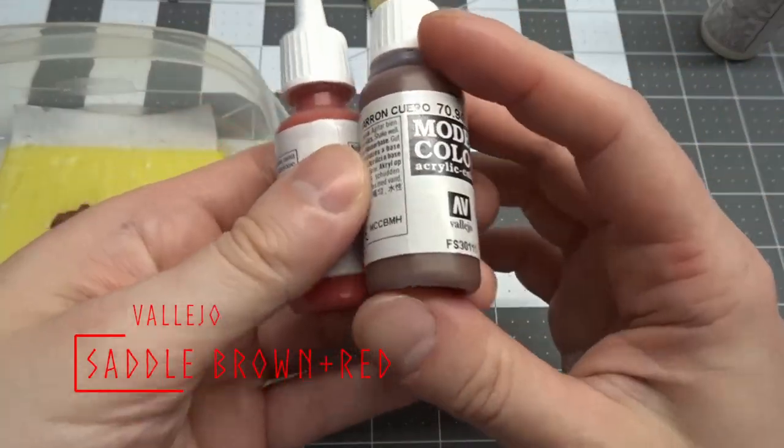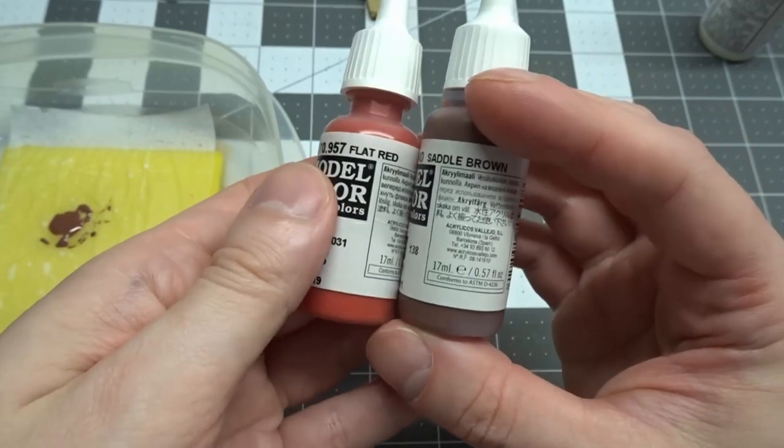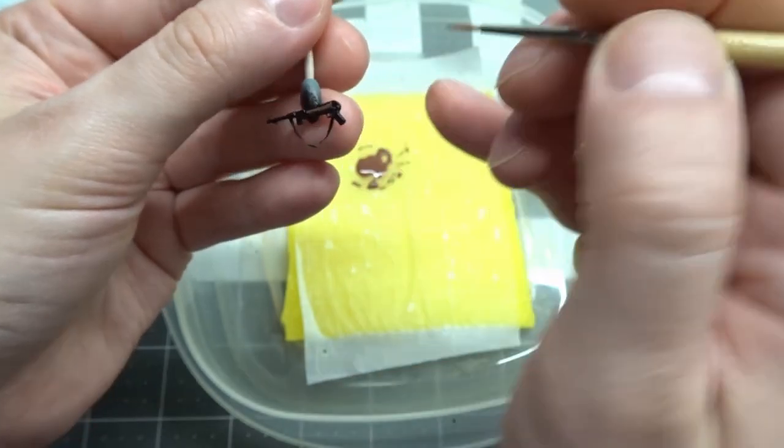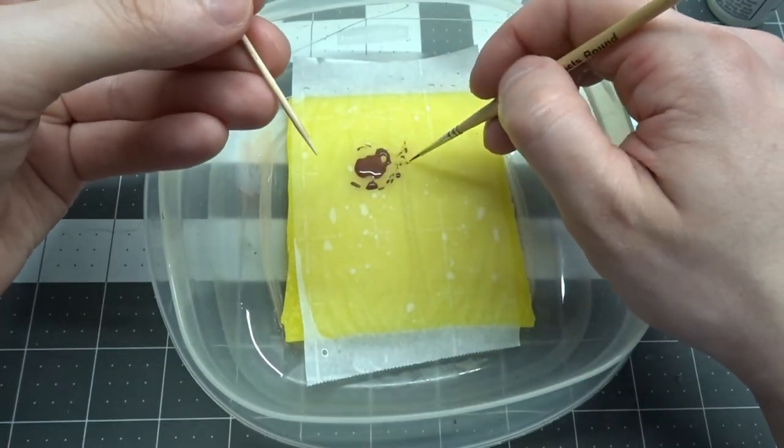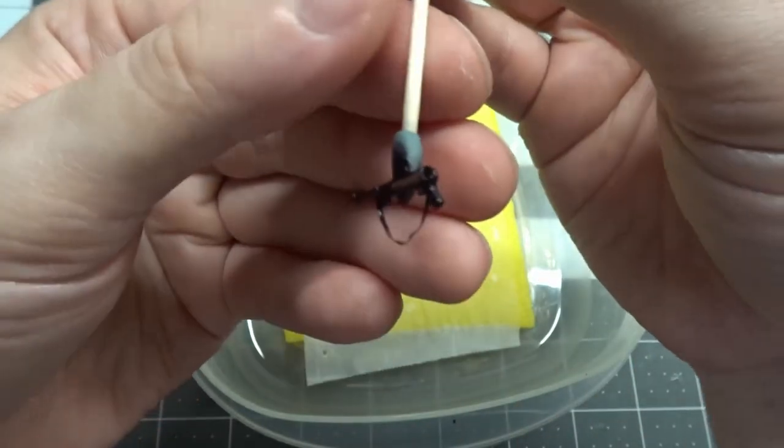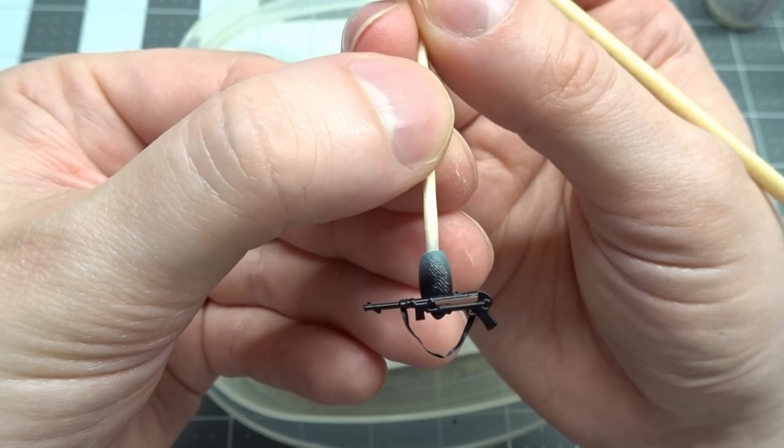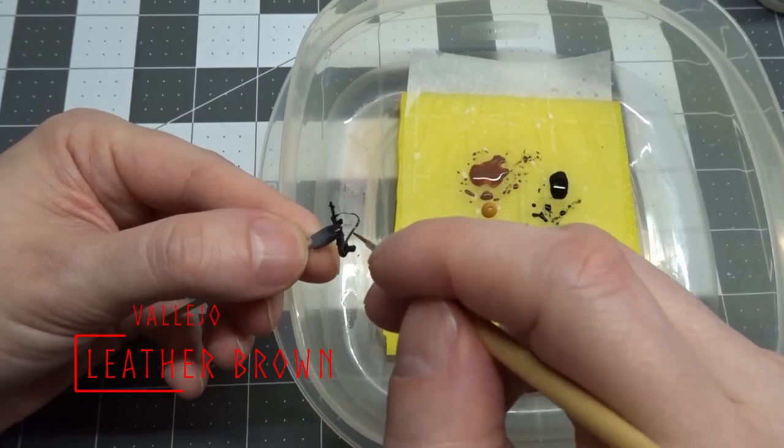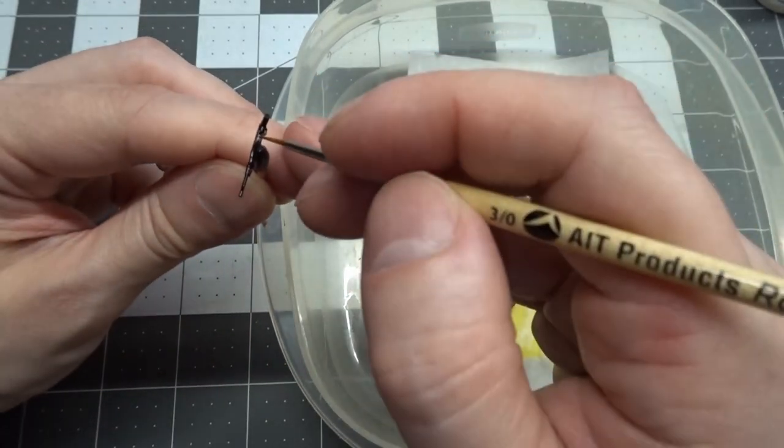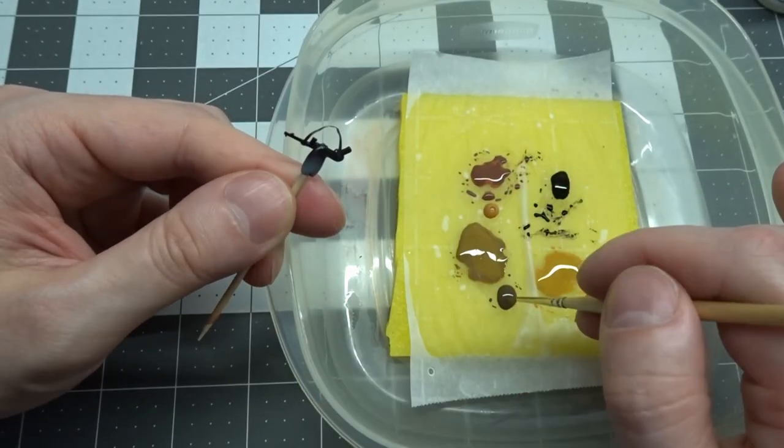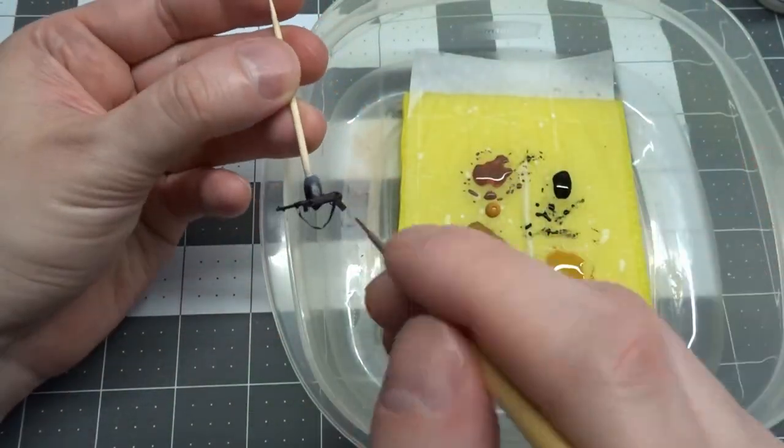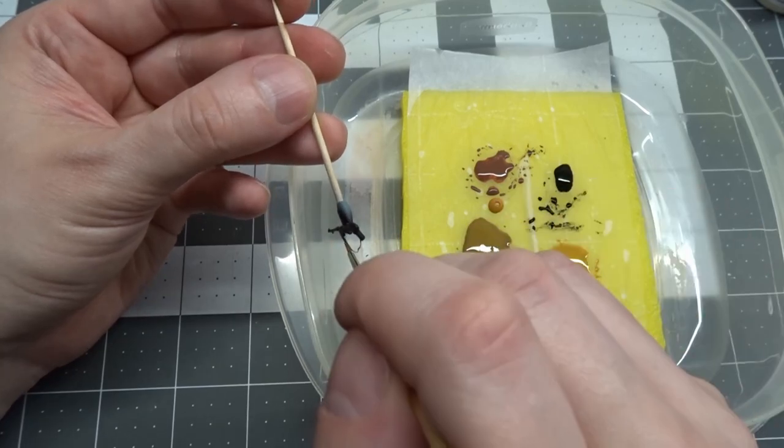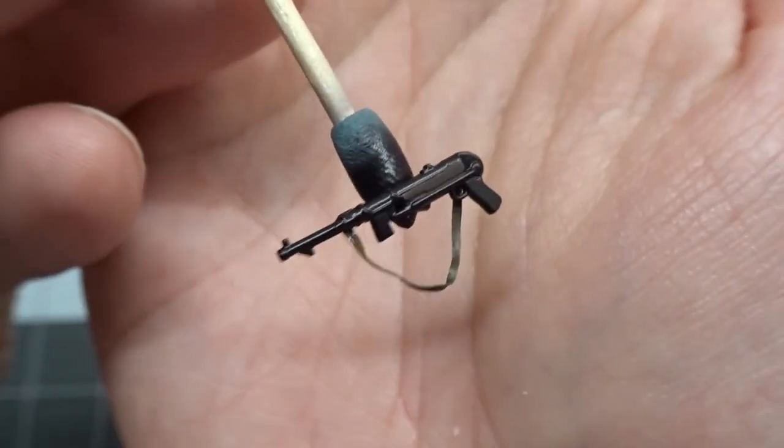The bakelite parts of the MP40s are going to be painted a mix of Vallejo Saddle Brown and Flat Red. This is painted over a coat of Alclad 2 Gun Metal, which is itself painted over gloss black. This color dries to a lot darker shade than what it looks like now. As these will hardly be seen, I just paint the slings with Vallejo Leather Brown and don't do any highlights or shadows. You can see just how dark that bakelite color got.